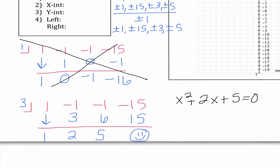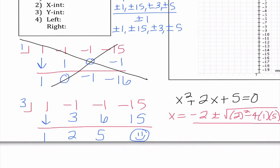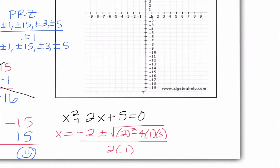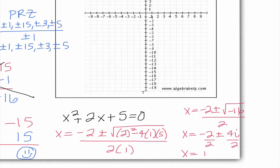I can't factor because no factors of 5 add up to 2, so I'm going to use quadratic formula. I get negative 2 plus or minus the square root of negative 16 over 2. So I have negative 2 plus or minus 4i, and I need to divide both of those by 2. So I get negative 1 plus or minus 2i.